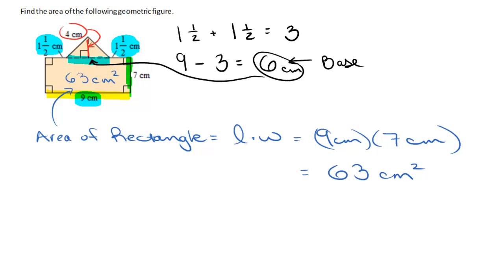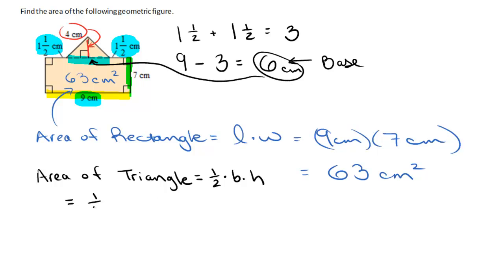Now we can use the formula for the area of a triangle: one half base times height. That's one half times 6 times 4, which gives 24 halves, or 12 centimeters squared.